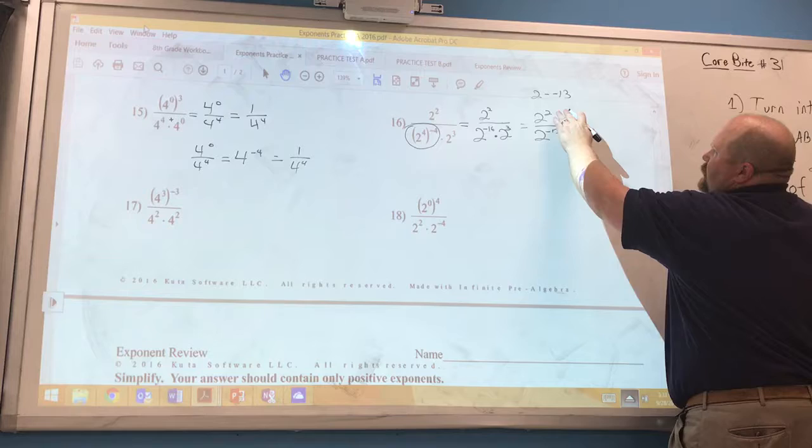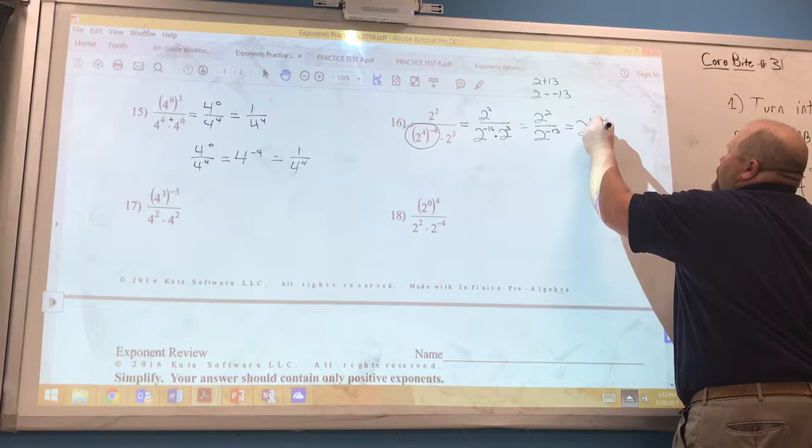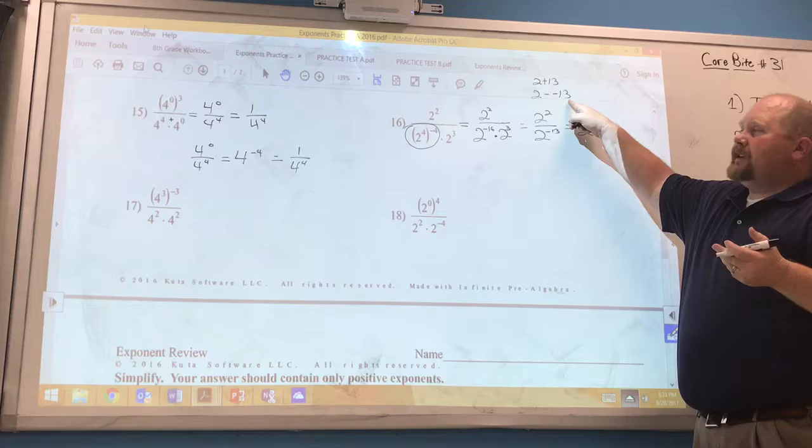So once again there's a little confusion there if you're not really good with your integers rules because a double negative creates a positive. This is the same as 2 plus 13. So our final answer is 2 to the 15th power. Good spot to use your calculator. 2 minus negative 13. Your calculator is going to say that it's 15 which would be your exponent.